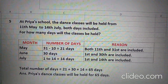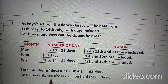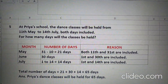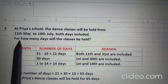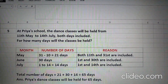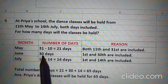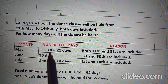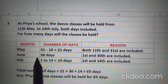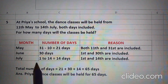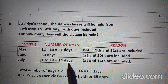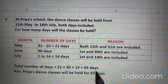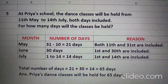Question 5: At Pia's school, the dance classes will be held from 11th May to 14th July, both days included. For how many days will the classes be held? Children, 11th May ko bhi count karenge and 14th July ko bhi count karenge. In May there are 31 days — 31 minus 10 days, because we are including 11th, so we subtract 10 from 31 that comes to 21 days. June full month 30 days. July 1 to 14 is 14 days, because we are including 14th also. Total: 21 plus 30 plus 14 that comes to 65 days. Therefore, Pia's dance classes will be held for 65 days.